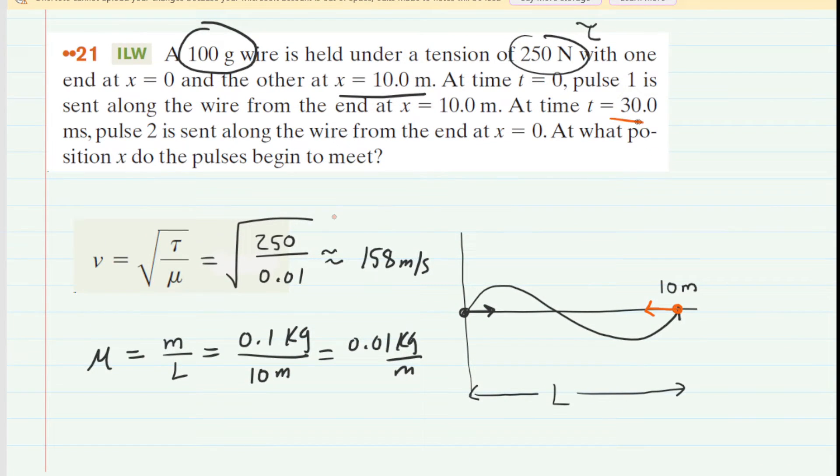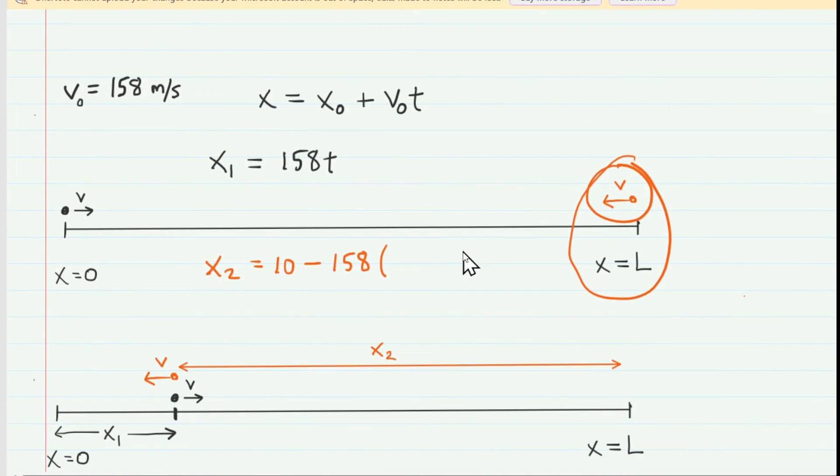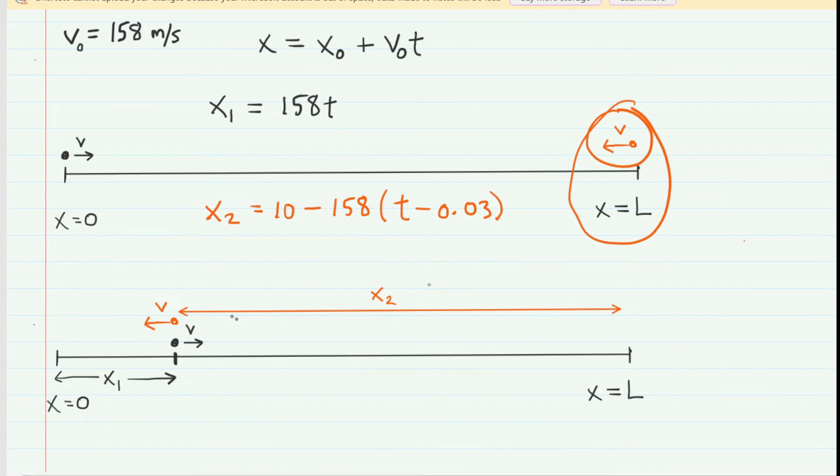The second pulse is not traveling for the complete time t. It is sent 30 milliseconds after pulse 1. So we actually have to subtract the 30 milliseconds from the time because it's not traveling for that complete time. Pulse 1 is traveling for a longer period of time. So we would subtract the 30 milliseconds, divide 30 by 1,000 to get it into seconds, so we have 0.03 seconds. So eventually these two x-coordinates, these two final x-coordinates, are going to be equal. The pulses are going to end up at the same final x-coordinate right there. So we're going to take this expression for the final x-coordinate of pulse 1 and set it equal to the final x-coordinate of pulse 2.